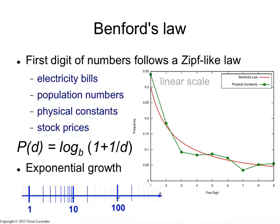Benford's law is Zipf's law for numbers. What it says is if you take a large collection of natural numbers — things like population numbers, the number of people that live in cities in various places in the world, physical constants, stock prices, electricity bills, and a number of other domains — and you look at the first digit of each number and plot its frequency, you will see a really strange picture.